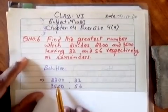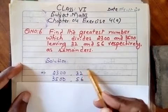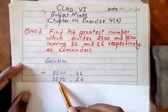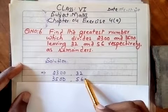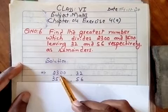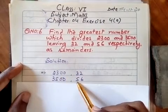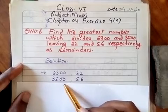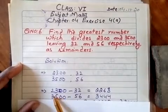When we divide 2300, the remainder is 32. When we divide 3500, the remainder is 56. So first, we will subtract 32 from 2300 because this is remaining. Then again, we will subtract 56 from 3500.